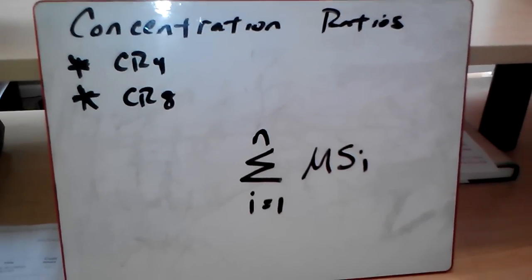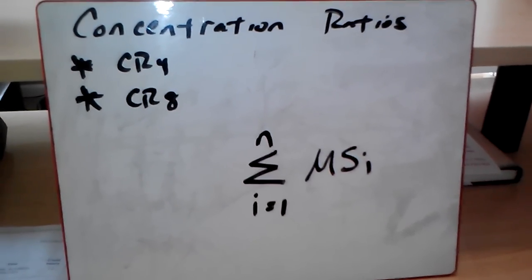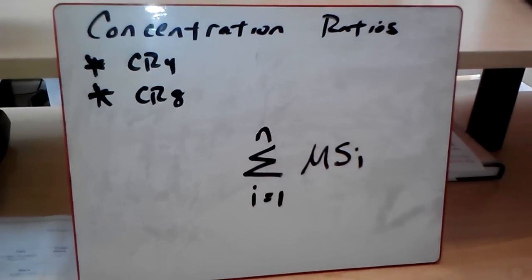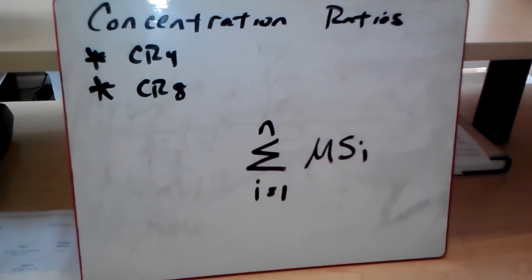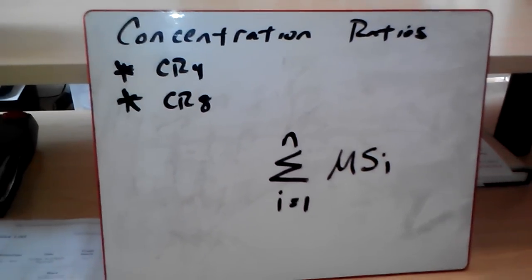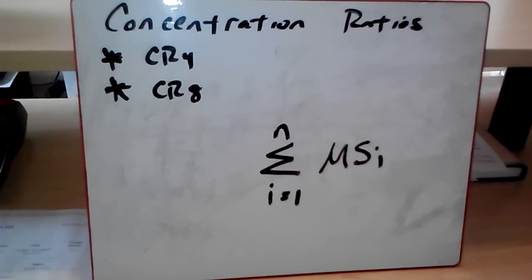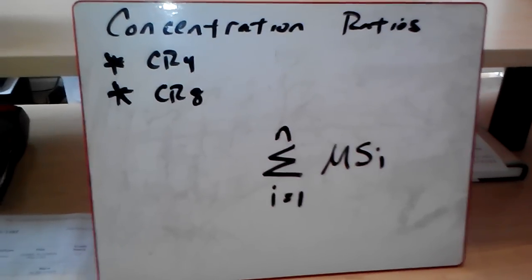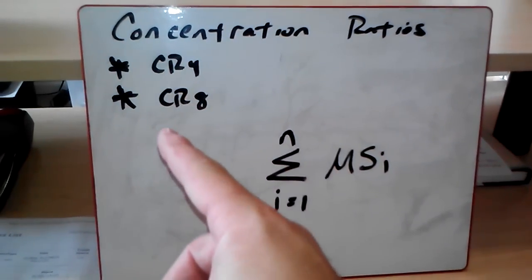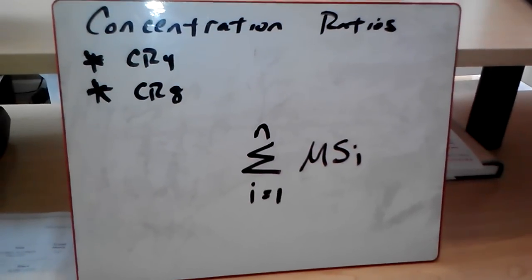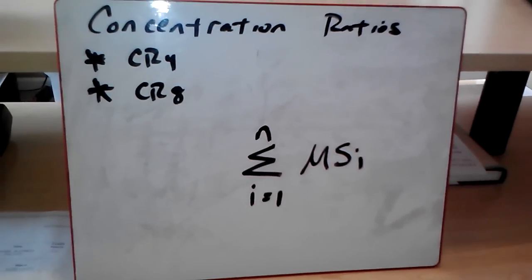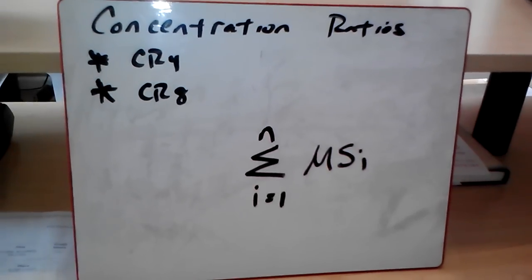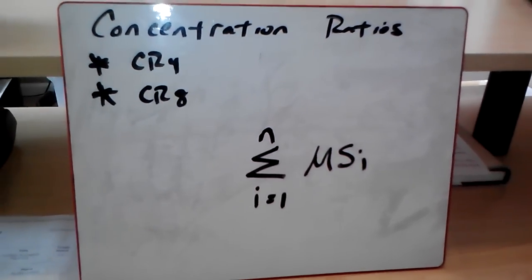I'm going to go over concentration ratios, which I went over in class the other day. Concentration ratios are simply summing the market shares of the top so many firms in an industry. We usually have two varieties: the CR4 and the CR8. That stands for the concentration ratio of the top four or concentration ratio of the top eight firms. They're separate problems usually, and normally they're the only two that are asked.